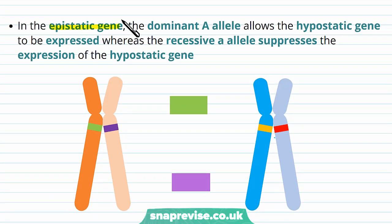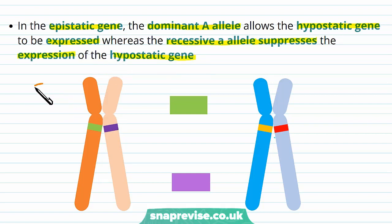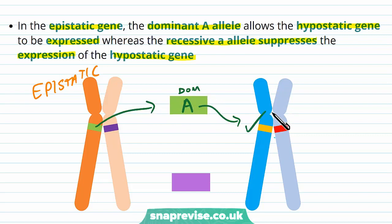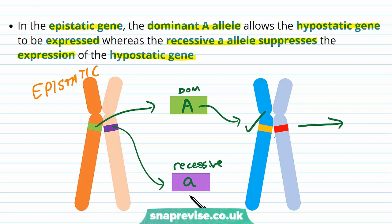In the epistatic gene: if it has a large A (dominant form), the hypostatic gene can carry on being expressed and the plant can be pink or purple. However, if it's homozygous recessive (two little a's), it will block the expression of the hypostatic gene and we get neither pink nor purple. If the flower has two copies of the recessive A allele, the recessives will block the hypostatic gene regardless of what it has — neither dominant B nor recessive B alleles will be expressed in the phenotype — and the flowers won't have any colour at all; they will be white.